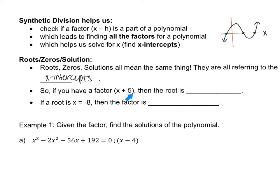If you have a factor x plus 5, the root is found by setting x plus 5 equal to zero and solving for x, which gives x equals negative 5. Going backwards, if you're given the root x equals negative 8, you just move the 8 to the other side: x plus 8 equals zero, so the factor is x plus 8. These two are just opposites — one you're finding the root by solving for x, and the other you're making x back into a factor.